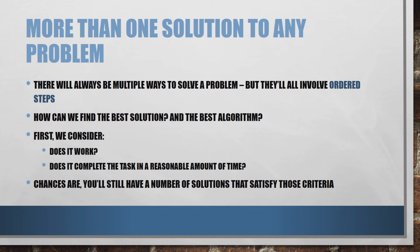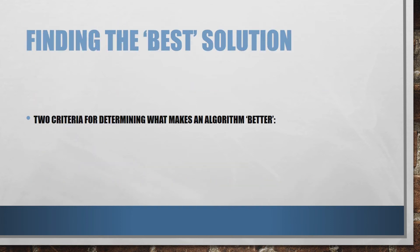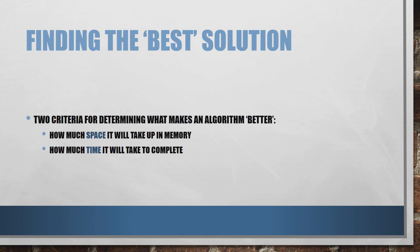But chances are you're going to still have a number of different solutions that satisfy those criteria. So we have to move on into a little bit more detail and see what we need to do to decide what's going to be our best solution. I've put 'best' in quotes there because it does become subjective. There are a couple of different criteria — it's up to you as the programmer or your end user to decide what your higher priority is when looking at what makes an algorithm better. The two things we're looking at are how much space it will take up in memory and how much time it will take to complete.